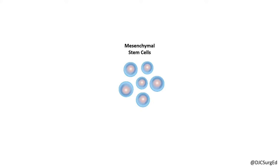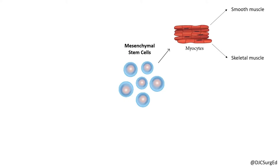Soft tissue sarcomas are a heterogeneous group of tumors of mesenchymal cell origin. Cell origins include, but are not limited to, the following: muscle, including both skeletal and smooth muscle. Rhabdomyosarcomas are tumors arising from skeletal muscle, and leiomyosarcomas from smooth muscle.